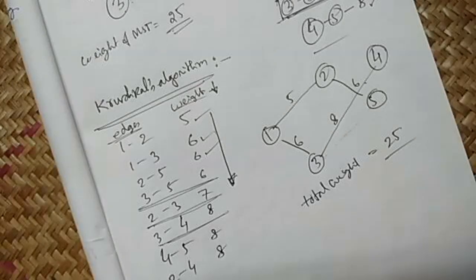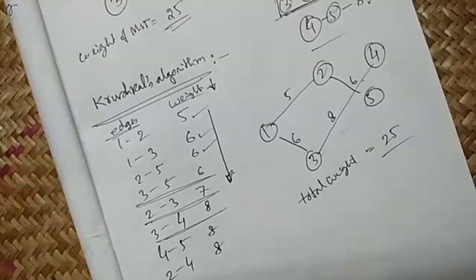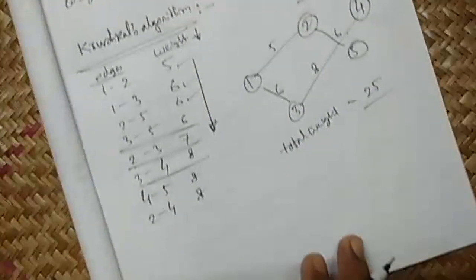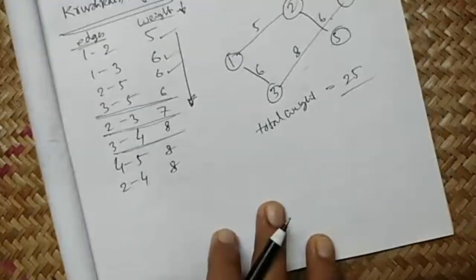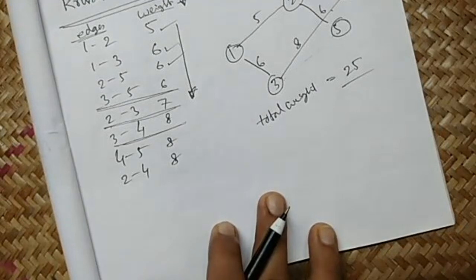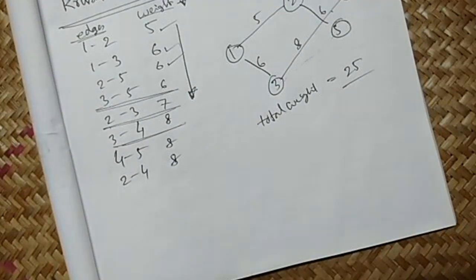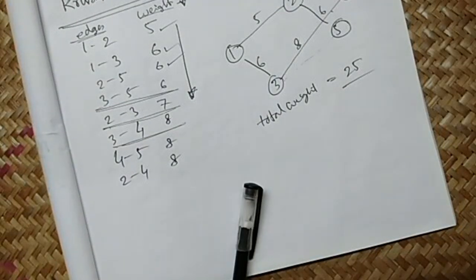There are two theorems — the Cut Optimality Theorem and the Path Optimality Theorem — which provide the proof for these two algorithms. Our time is almost up today, so we'll stop here.